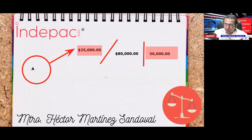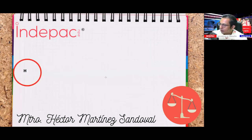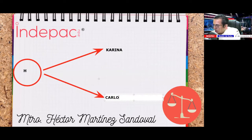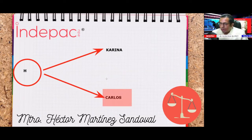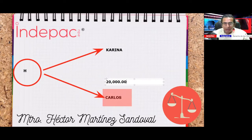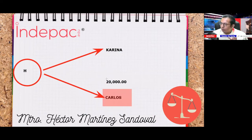Ejemplo de un particular: yo le debo transmitir dinero a Karina por un vínculo laboral. Por error, no se lo transfiero a Karina sino a Carlos. Como no hay ningún vínculo entre Carlos y mi persona, Carlos recibió dinero que no le corresponde. Carlos tendría que regresármelo. Si Carlos no me lo regresa, yo voy a iniciar una acción civil por enriquecimiento ilícito, porque él no debió haber recibido esa cantidad.